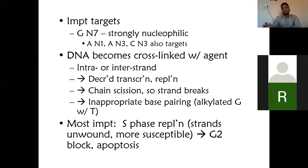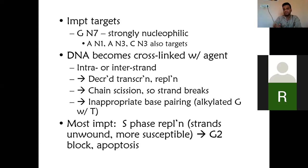There is also inappropriate base pairing. Remember: A pairs with T and C pairs with G. In the DNA double strand, if instead of A-T pairing, A-G or A-C pairing is happening, that is improper base pairing. That improper base pairing cannot again be transcribed or replicated.